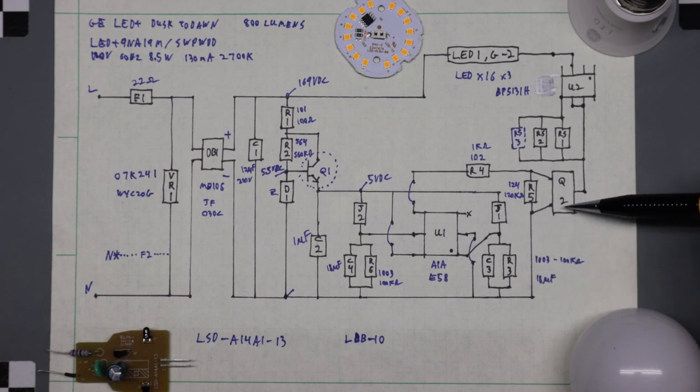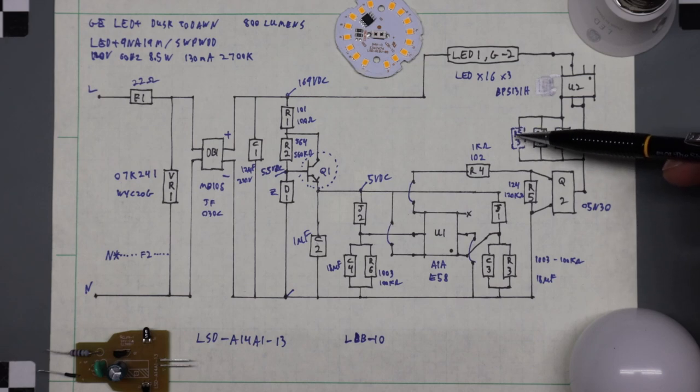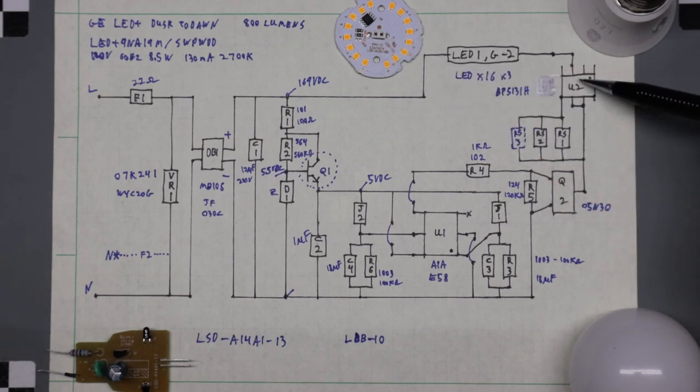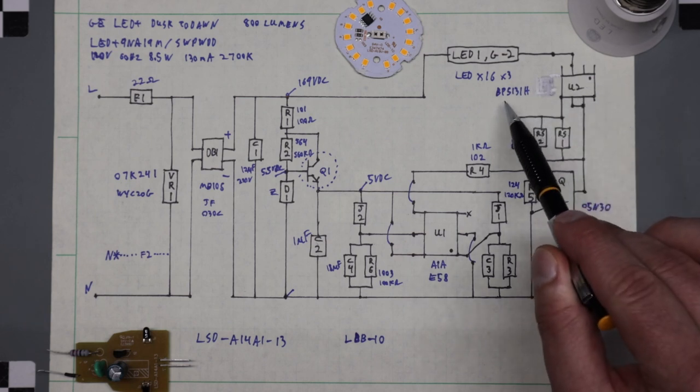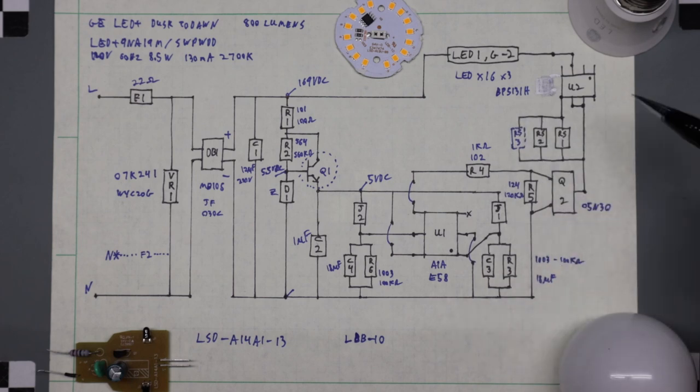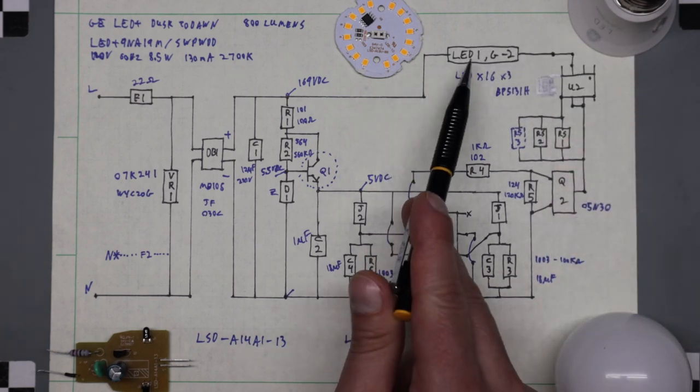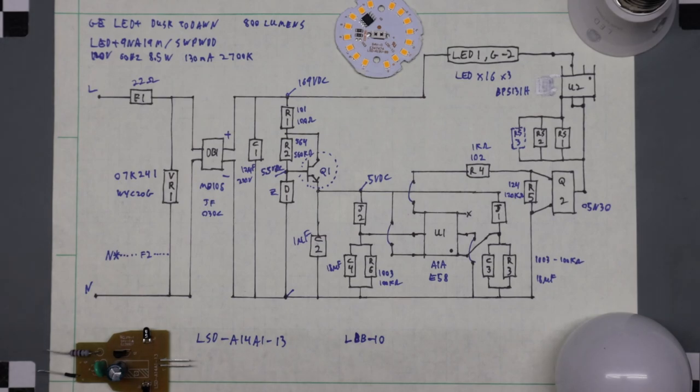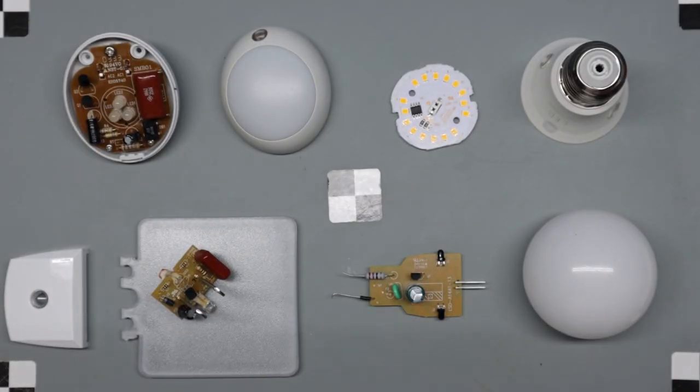So you get the ground through the MOSFET to the sense resistors. There's an extra one on here for obviously a different configuration that's not used. And then you have your current controller, which is a BP5131. And then going through your LEDs. And that's it. If you have any questions or comments, leave them in the comments below.